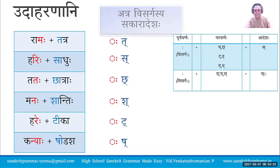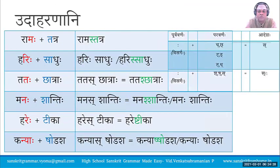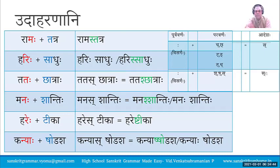In all these cases Visarga gets replaced by Sakara. Ramaha Tatra becomes Ramas Tatra. Harihi Sadhu becomes Hariś Sadhu or Harihi Sadhu. For Tataha Chhatraha: Visarga is replaced by Sakara giving Tatas Chhatraha, then that Sakara becomes Shakara by Shchutva, so the final answer is Tataś Chhatraha.